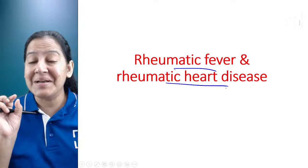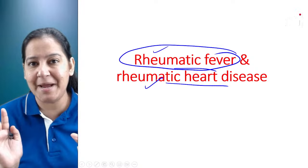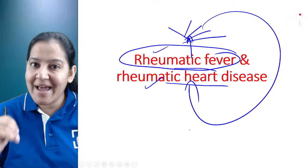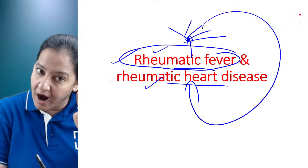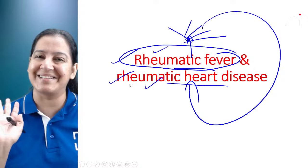Now, do you know the difference between rheumatic fever and rheumatic heart disease? In your exam, they are not the same — please understand. Rheumatic fever is the umbrella term that includes five diseases. One of them is rheumatic heart disease. If rheumatic fever is asked, you write all five diseases. If rheumatic heart disease is asked, you write only that one. The examiner asks specific questions; write specific answers.